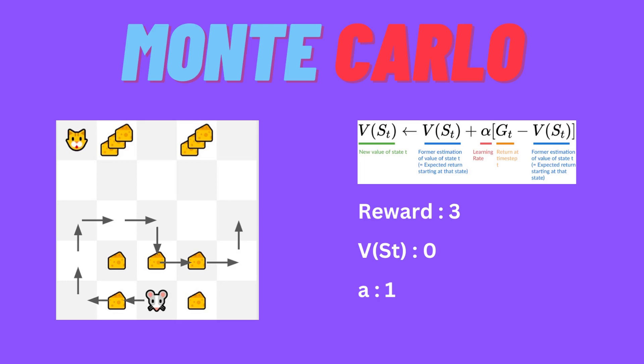So the previous state value estimate is 0, plus 3 minus 0. The current state value becomes 3. This means: if we start from this state, we have a chance of earning 3 rewards to reach the goal. Using the Monte Carlo method, we can estimate and determine the value of a state.